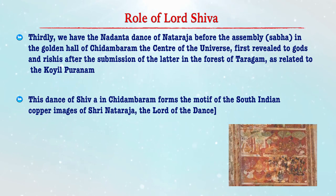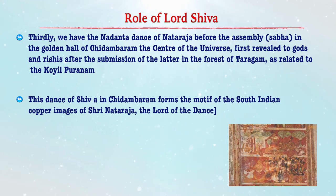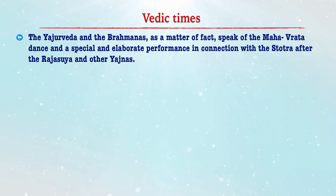We also have the Nadita dance of Nataraj before the assembly sabha in the golden hall of Chidambaram, the center of the universe. This dance was first revealed to gods and rishis in the form of dancing Shiva. We find various copper images of Shri Nataraj in southern India. As far as the Vedic culture is concerned, we find a connection between the Ashwamedha and other sacrifices and Yajnas — whenever they were performed, there was some sort of a specified sacred dance. The Yajurvedas and the Brahmanas speak of Mahavrata dance and a special elaborate performance in connection with the Stotras after the Rajasurya or other Yajnas.